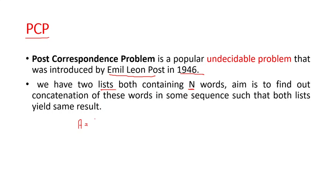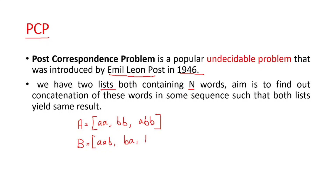I need two lists. Let me name the first list A. The first word in list A is AA, the second word is BB, and the third one is ABB — a combination of A and B. Then I will take another list B, where the first word is AAB, the second word is BA, and the third one is a single B. Here n is 3, and I have equal number of words in both lists.